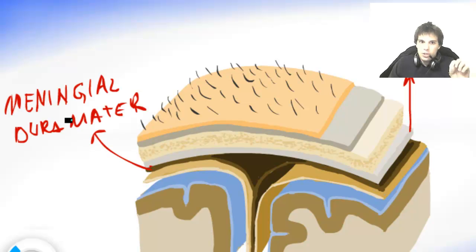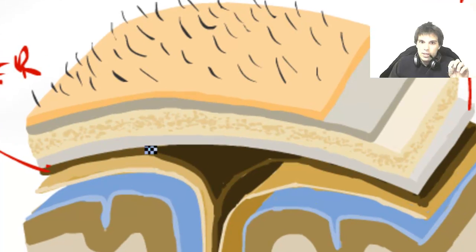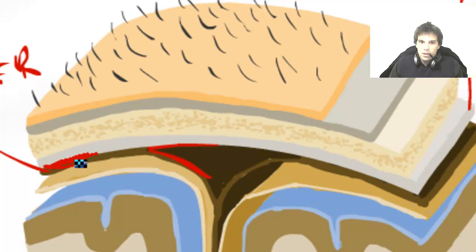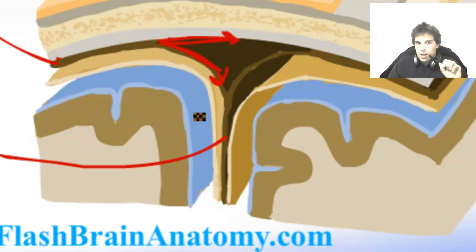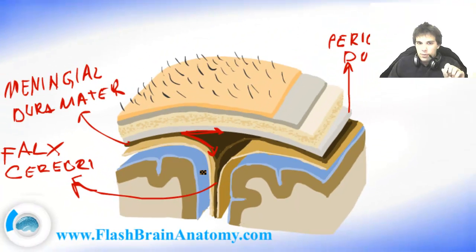The interesting thing about the meningeal dura mater is that here it separates from the periosteal dura mater. Over here they were attached to each other, but here they separate. The periosteal dura mater still goes with the bone, and the meningeal dura mater separates, and here they form the falx cerebri. And that is how the falx cerebri is created. If you can remember, we drew the falx cerebri in the last lesson when we took out the whole brain out of the skull.